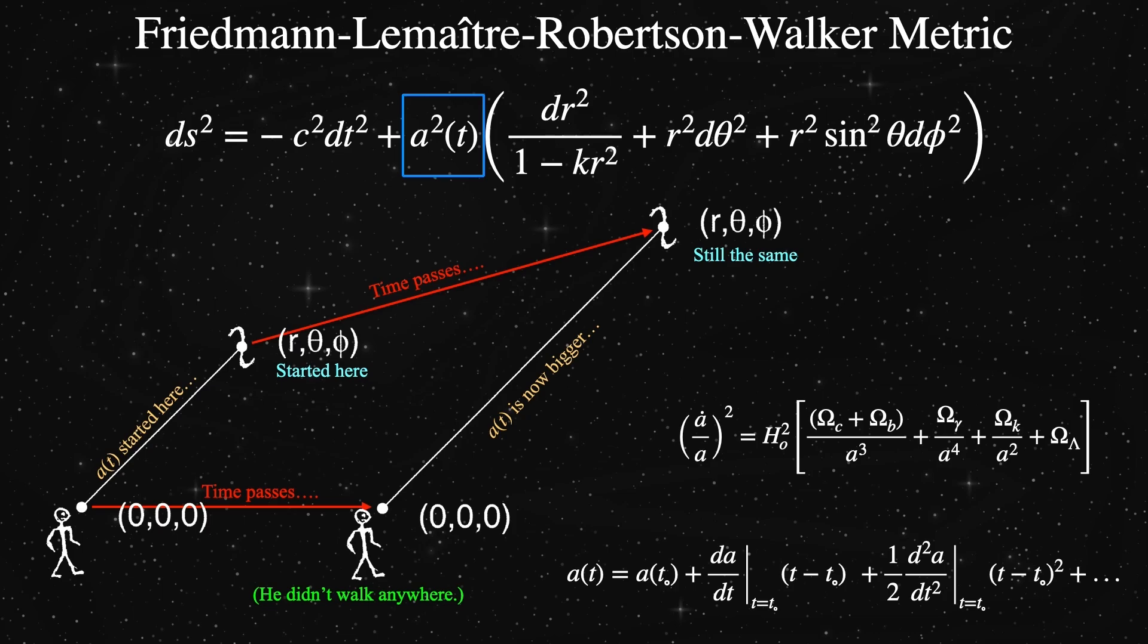All the omegas are just numbers that give the current cosmological densities compared to flat space of cold dark matter, baryonic matter, radiation, curvature, and dark energy. All the omegas are observable, as is the Hubble constant, h sub nought. Once you know these observables, then you know the scale factor's full evolutionary history and its future.